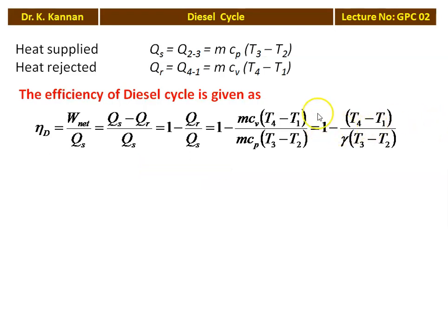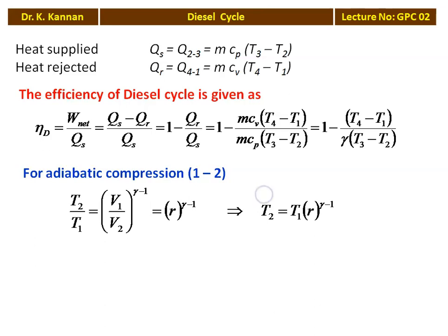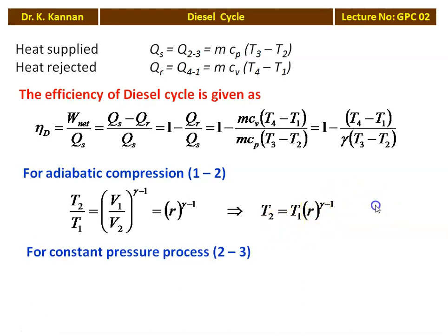We simplify the equation in terms of measurable parameters, since temperature is very difficult to measure at the end of each process. For the first process — adiabatic compression: T2/T1 = (V1/V2)^(gamma−1), where V1/V2 is the compression ratio R, so T2/T1 = R^(gamma−1), giving T2 = T1 · R^(gamma−1).